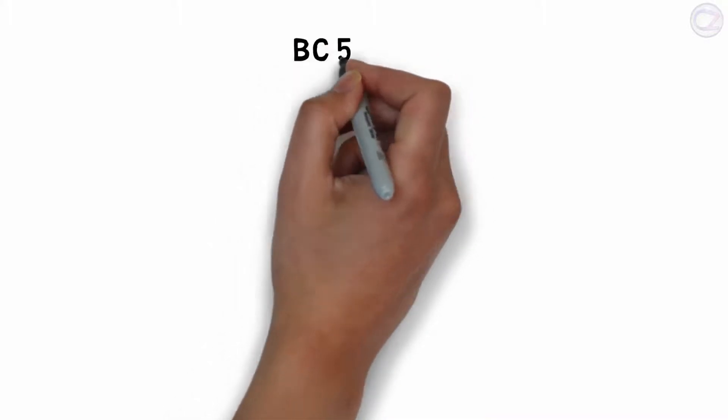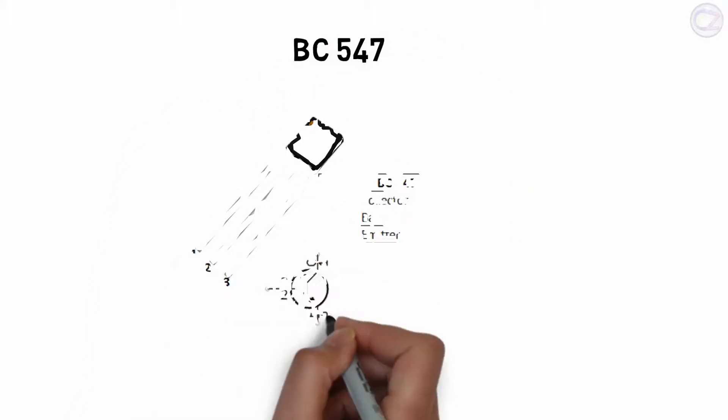BC547 is an NPN transistor. This is the suitable image that helps you find the base, emitter, and collector of this transistor.